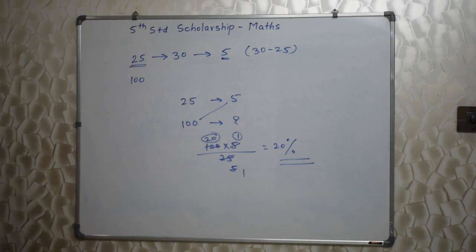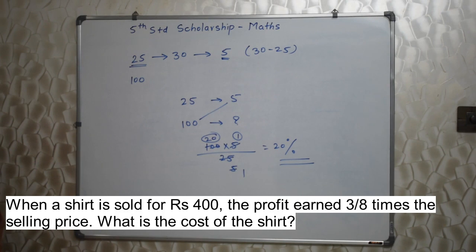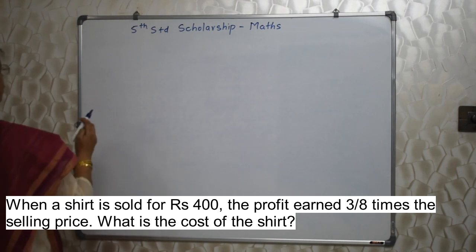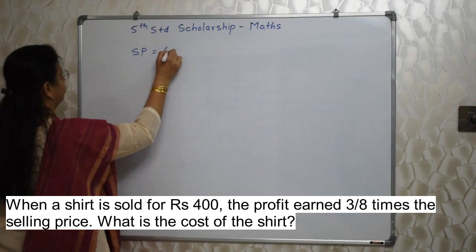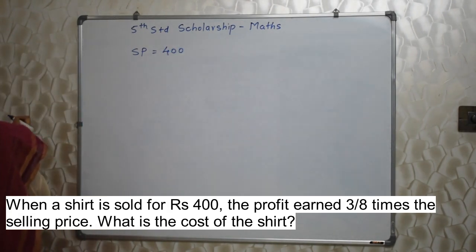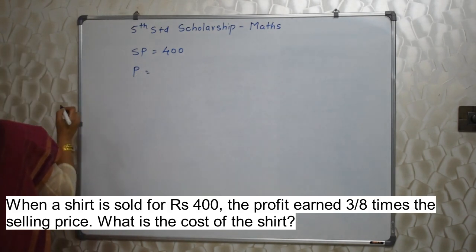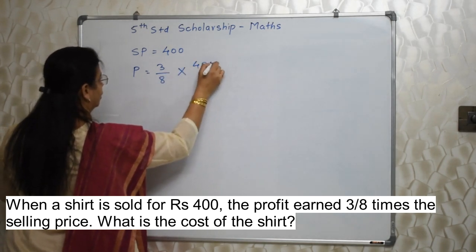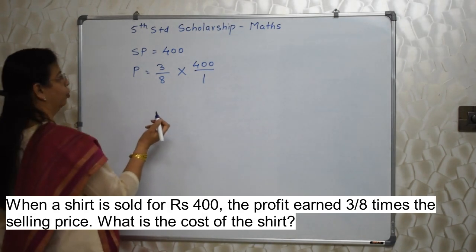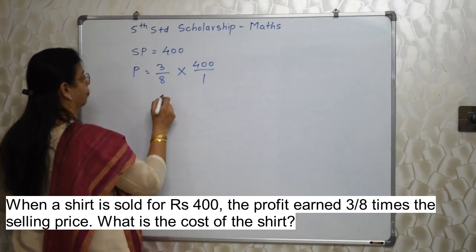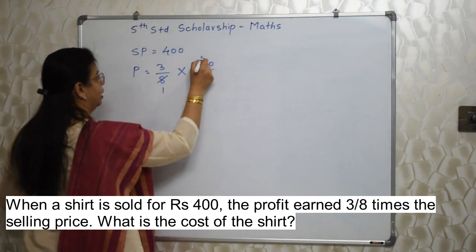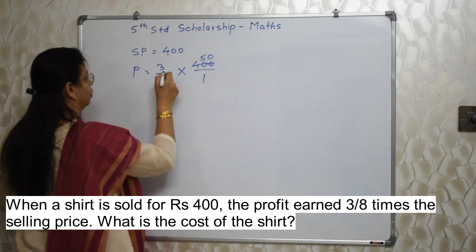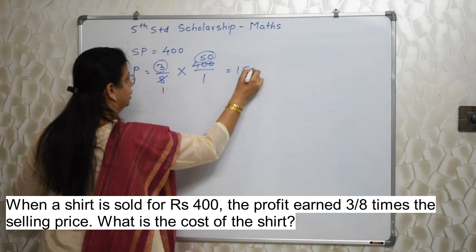Next: when a shirt is sold for Rs. 400, the profit earned is 3/8 times the selling price. What is the cost of the shirt? Selling price = Rs. 400. Profit = (3/8) × 400 = 3 × 50 = Rs. 150.